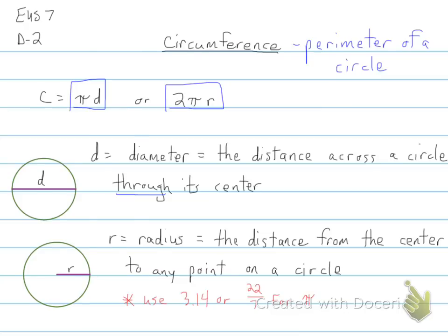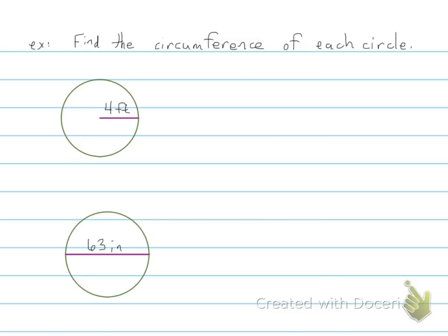So let's look at our first example. Find the circumference of each circle. So this first one we're given the radius, so our formula for finding circumference is 2 times 3.14 times 4.